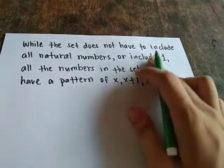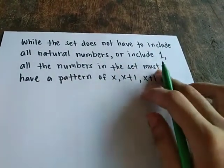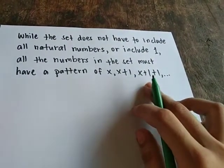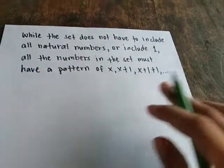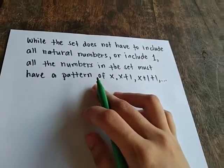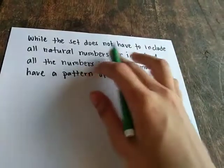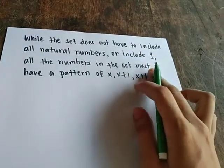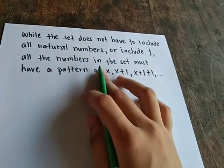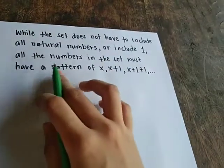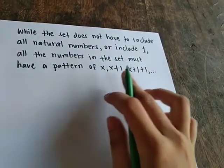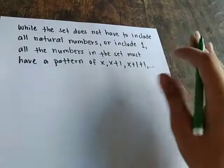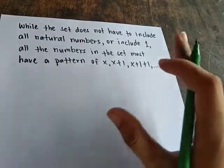The set does not have to include all natural numbers or include 1. All the numbers in the set must have a pattern of x, x plus 1, x plus 1 plus 1, and so on. It means it is not necessary to include all natural numbers, and it is not necessary to always start at 1. What is important for a set to be called an inductive set is that all numbers in the set must follow the pattern of x, x plus 1, x plus 1 plus 1, and so on.